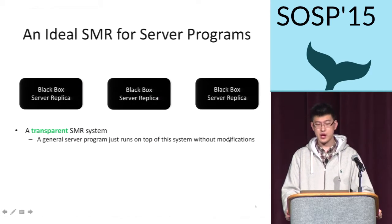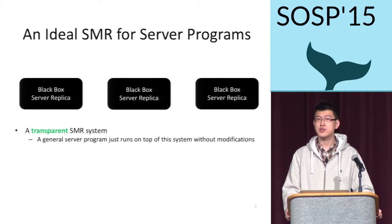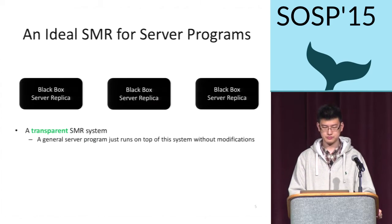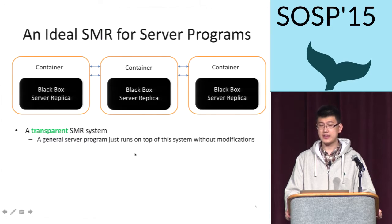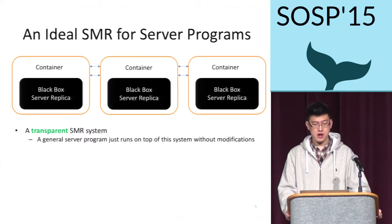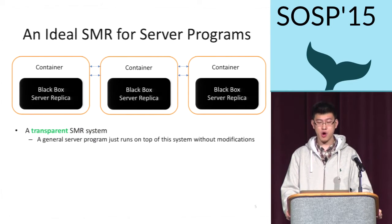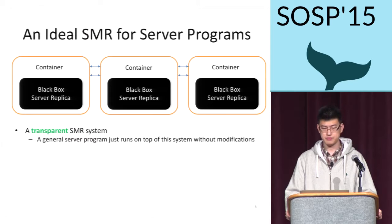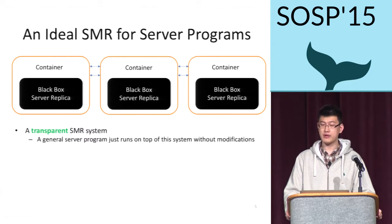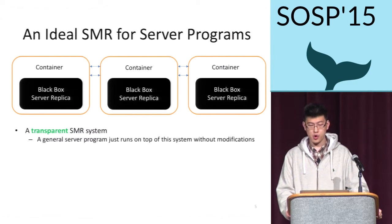After all these challenges, people may want to ask: what's an ideal state machine replication system that solves all the previously mentioned problems? The system should take any general server programs as a black box and provide transparent replication service. Transparent means a server program just runs on top of the system without any modifications. Developers only need to focus on their own server implementation instead of replication, and don't have to worry about any SMR-related protocols or implementations.